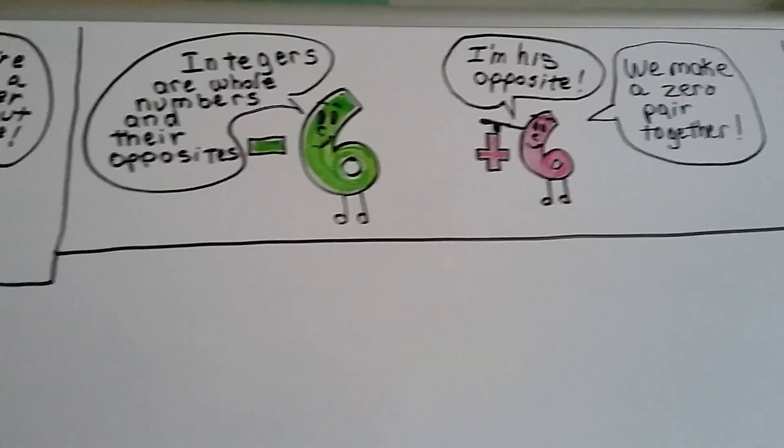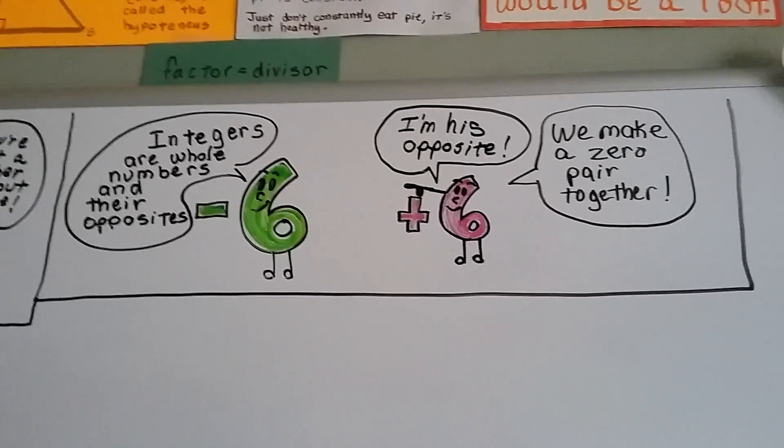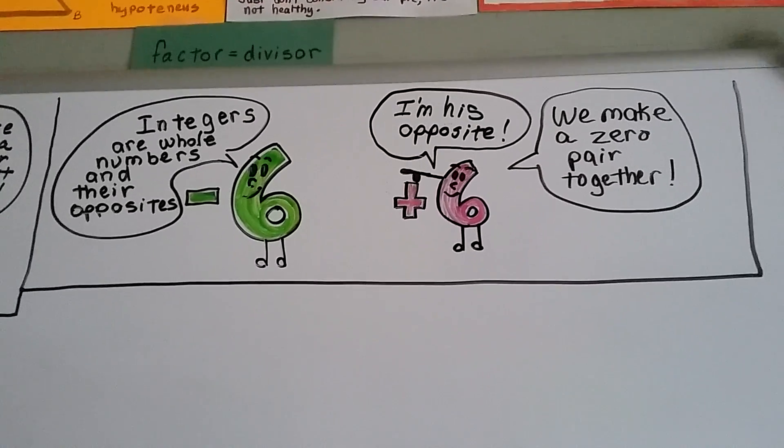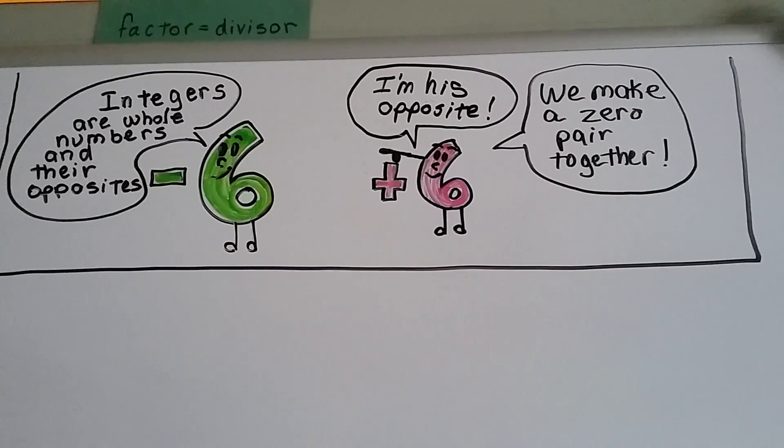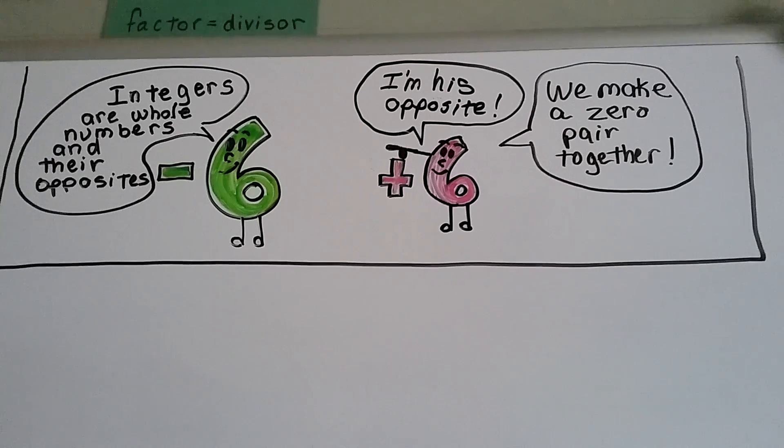Alright, so do you remember integers are whole numbers and their opposites? Not fractions or decimals, they've got to be whole numbers, like counting numbers. And their opposites, so if you have a negative 6 its opposite is a positive 6.